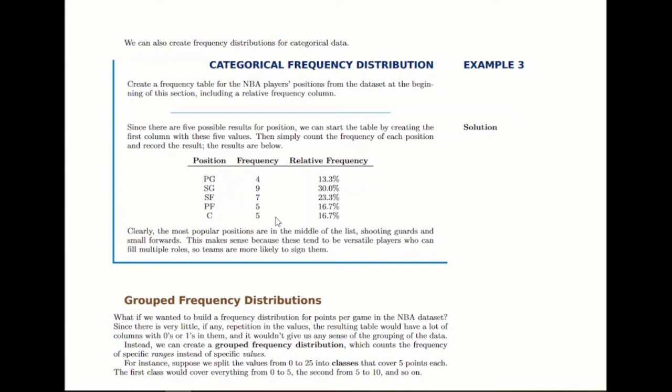Again, the goal is to see where the data is grouped and where it's spread out. Here you can notice that the most common positions are shooting guards and small forwards, and if you know something about basketball, you can make sense of why that would be. The other three positions are less frequent and evenly distributed.